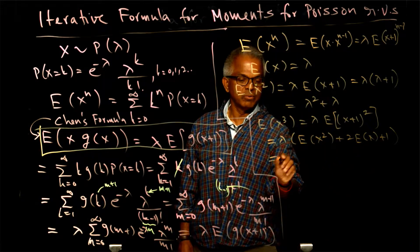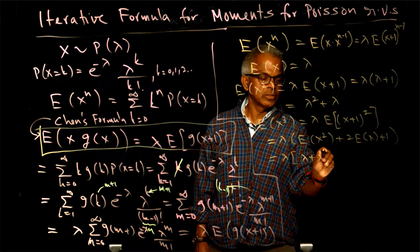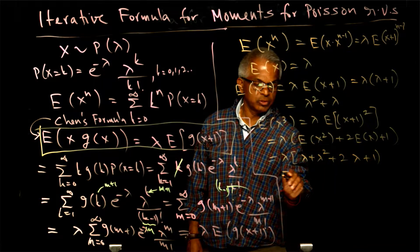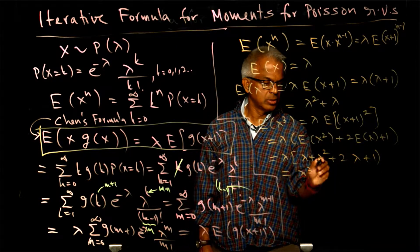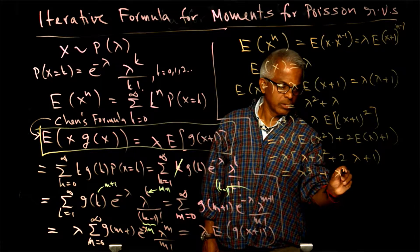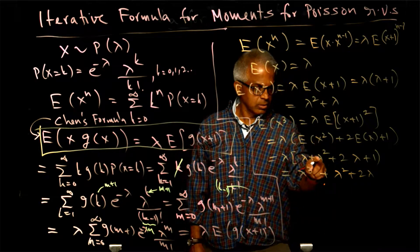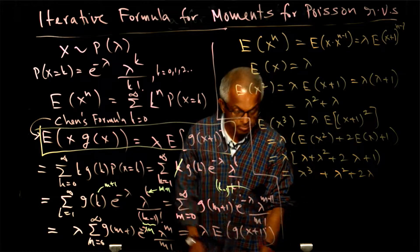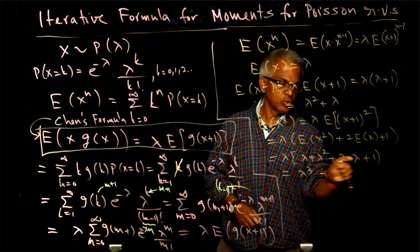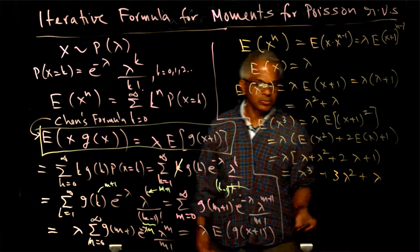Now if we substitute, we get lambda multiplied by: expected value of x squared is (lambda + lambda squared), plus 2 times the expected value of x, plus 1. Expanding this gives lambda cubed plus 3 lambda squared plus 3 lambda.